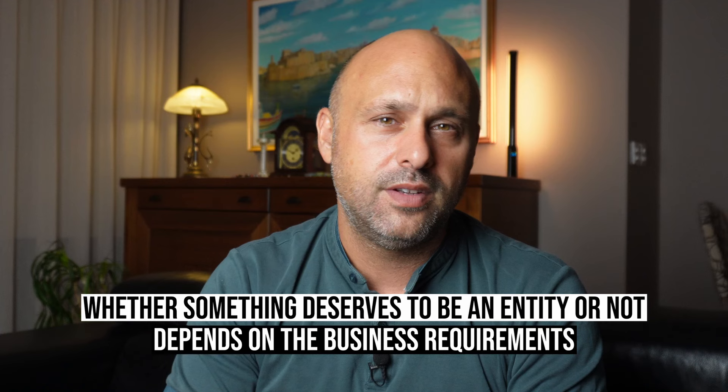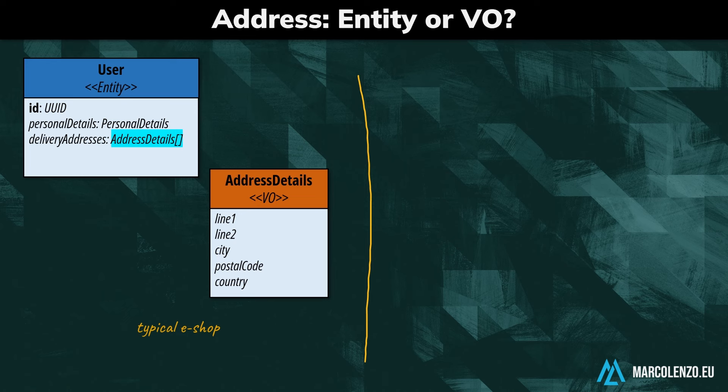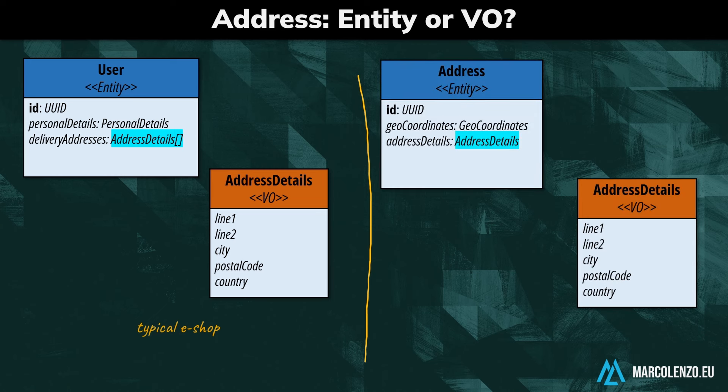Whether something deserves to be an entity or not in our domain depends on the business requirements. A delivery address is typically modeled as a value object associated with a user or account in an in-shop system. However, the same address might be modeled as an entity in a logistics or public government system — for instance, if we need to know how many residents live at a particular address.